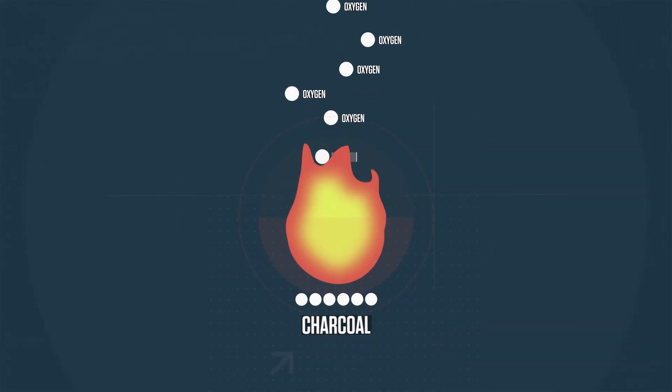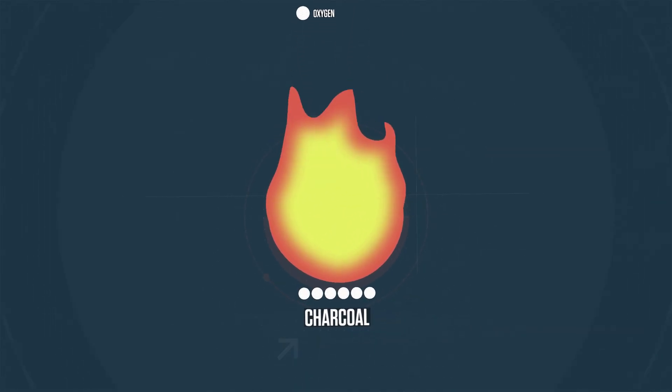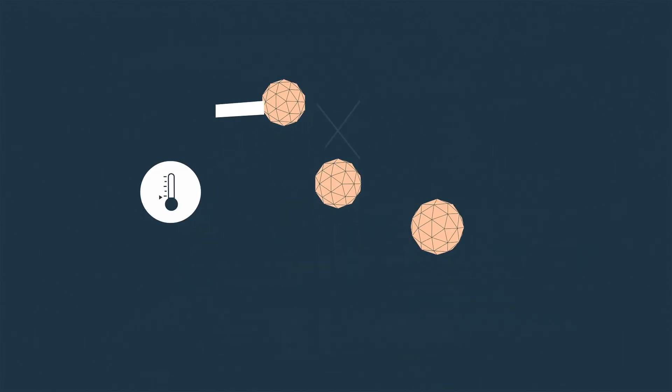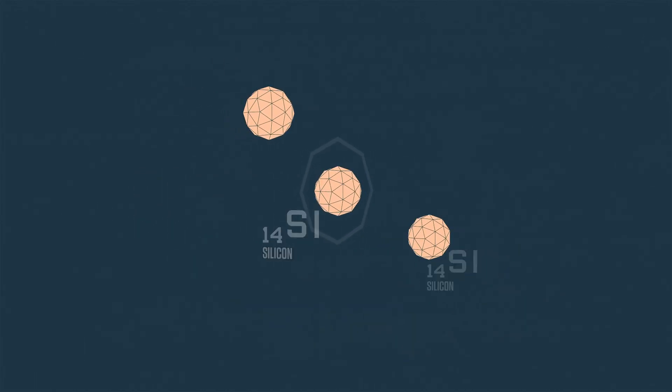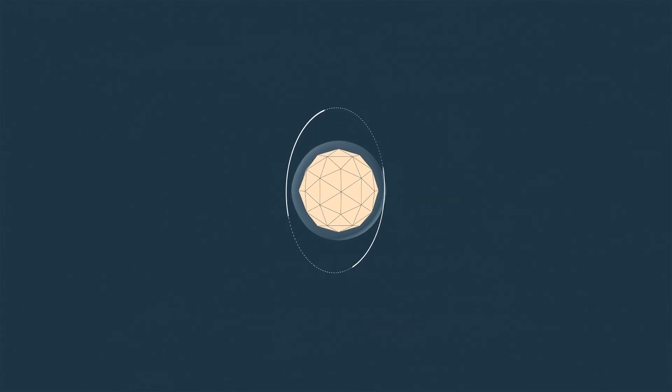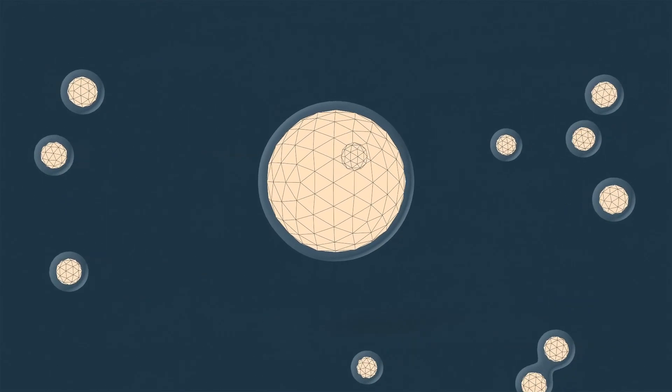And as it burns, it releases oxygen, fueling the fire. At 2,500 degrees, tiny grains of silicon melt into super hot pellets of glass that spatter and ignite other flammables in the mix.